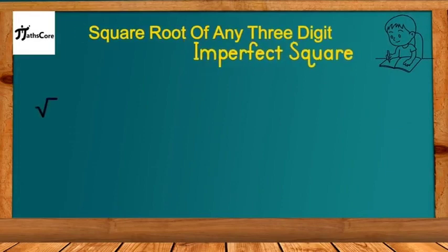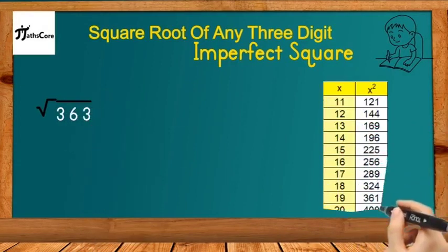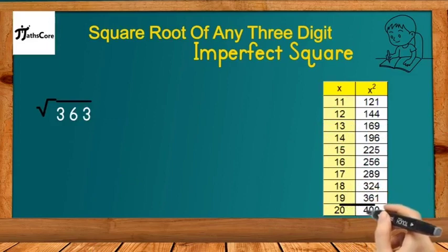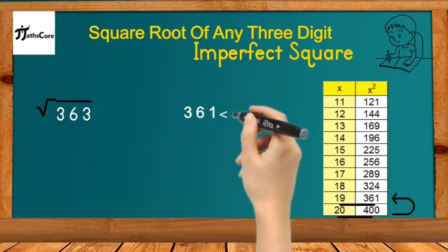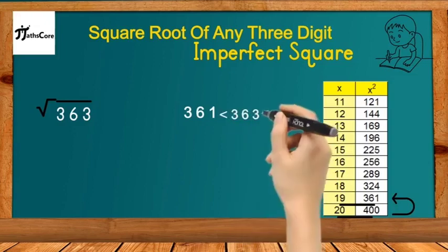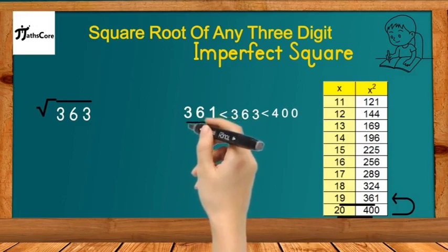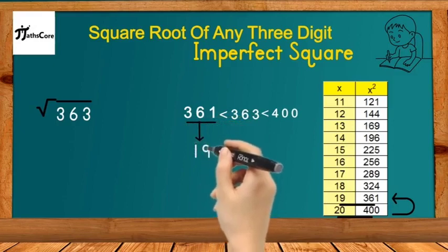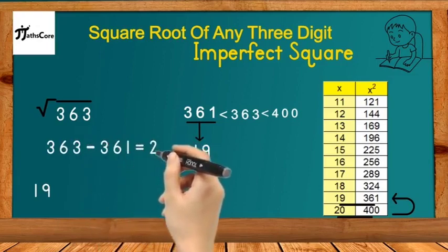Our next example is the square root of the three-digit imperfect square 363. First, write down the squares of 11 to 20. We find between which two perfect squares 363 lies: 19² = 361 and 20² = 400. So 363 lies between 361 and 400. We select the smaller perfect square, 361, and its square root is 19, so we write down 19.